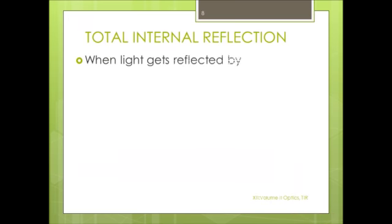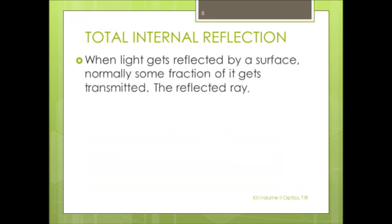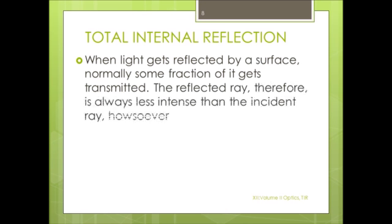When light gets reflected by a surface, normally some fraction of it gets transmitted. The reflected ray, therefore, is always less intense than the incident ray, howsoever smooth the reflecting surface may be.